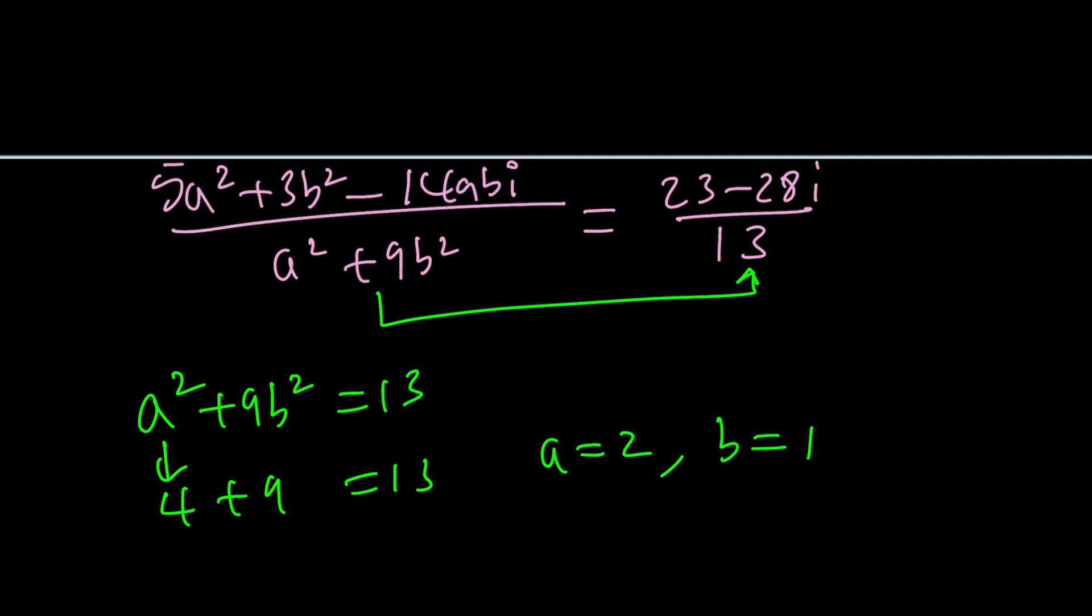So looks like a equals 2 and b equals 1 is going to work. But those are not the only numbers probably right. We'll check because even if you use a negative a or negative b you'll still get the same sum. But we have to check the numerator as well. So for example this one.